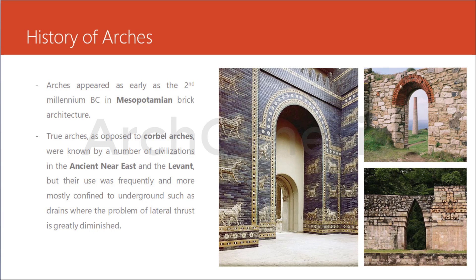Next is the history of arches. Who started making arches — Greeks or Romans? Arches appeared as early as the second millennium BC in Mesopotamian brick architecture. True arches, also known as corbel arches, were also seen in a number of civilizations in the ancient Near East, but they did not use them frequently — mostly in underground services such as drains. In this image you can see a type of arch used in the ancient Near East.